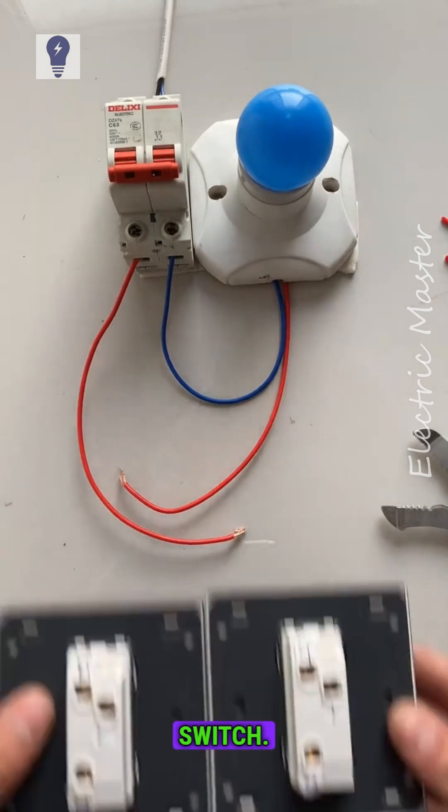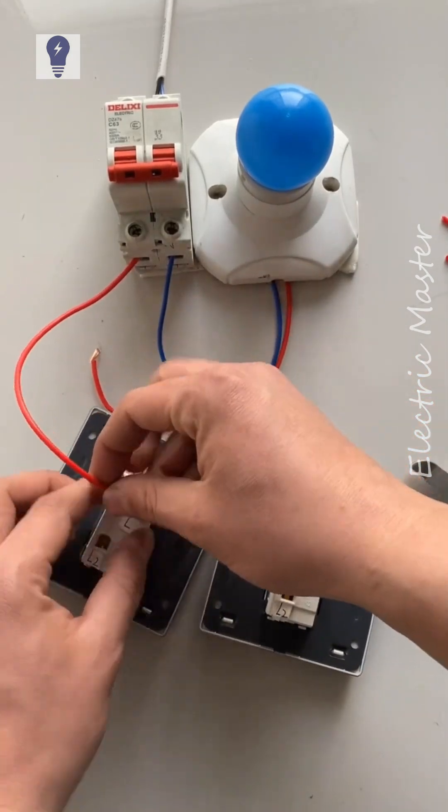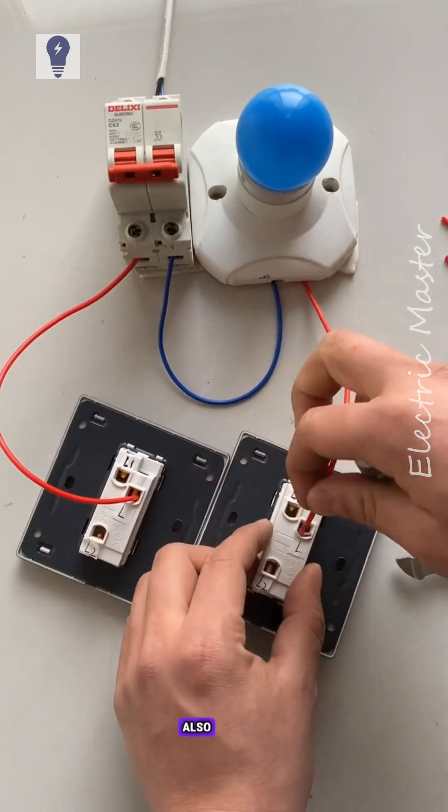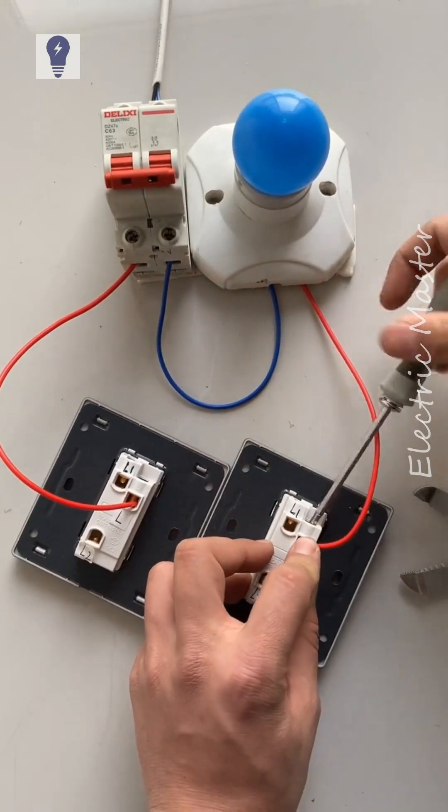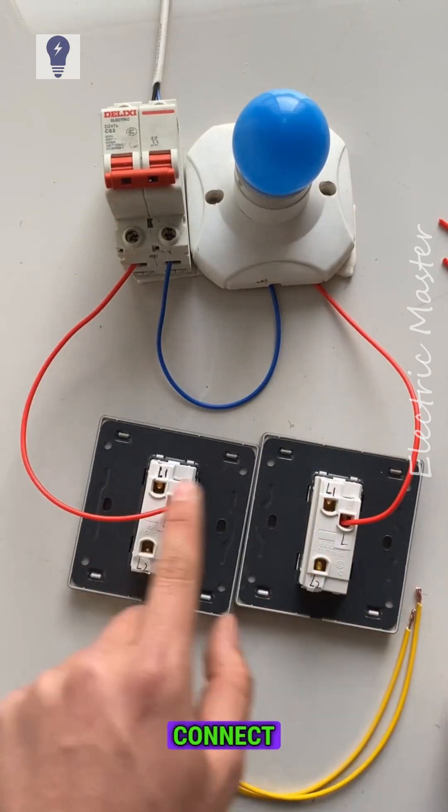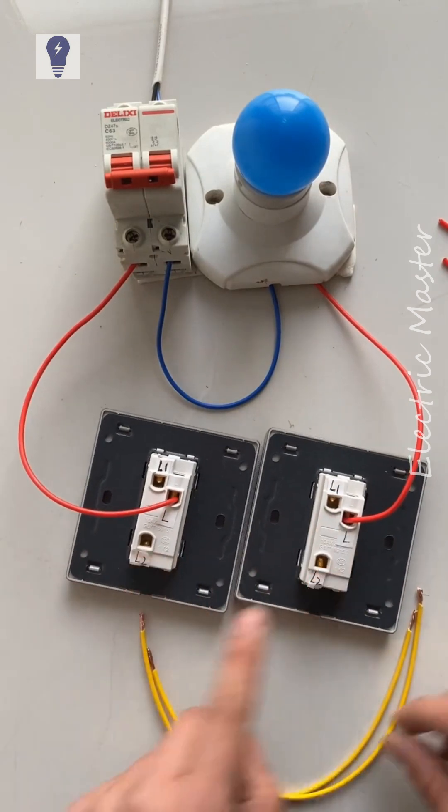This is a single pole switch. Prepare two single pole, dual control switches. Connect the live wire to L. Also connect the control wire to L. Now, let's find two more wires. Connect L1 to L1 and L2 to L2.